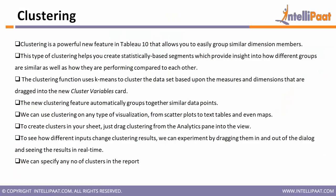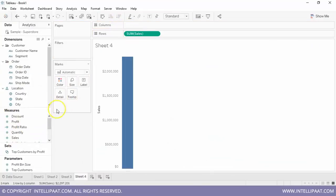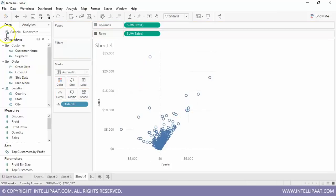Next is clustering, which has been available in Tableau from version 10 onwards. If you know R or Python, you would have studied the k-means clustering algorithm — Tableau uses k-means clustering to create clusters. Clusters help you create statistically based segments that provide insight into how different groups are similar. It groups similar data points together. In Tableau, clustering is a simple drag and drop, but in the back end it actually runs the k-means clustering algorithm.